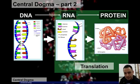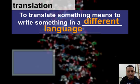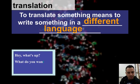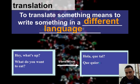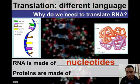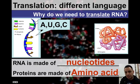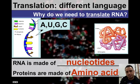This is called translation. It has to do with going from one language to another. To translate something means to write it in a different language — for example, 'Hey, what's up? What do you want to eat?' becomes 'Hola, ¿qué tal? ¿Qué quieres comer?' So why do we need to translate RNA? RNA is made up of nucleotides with these bases — A, U, G, C. We're going to read RNA and use that code to build something from a different language, because proteins are made from amino acids. That's what we mean by translate.